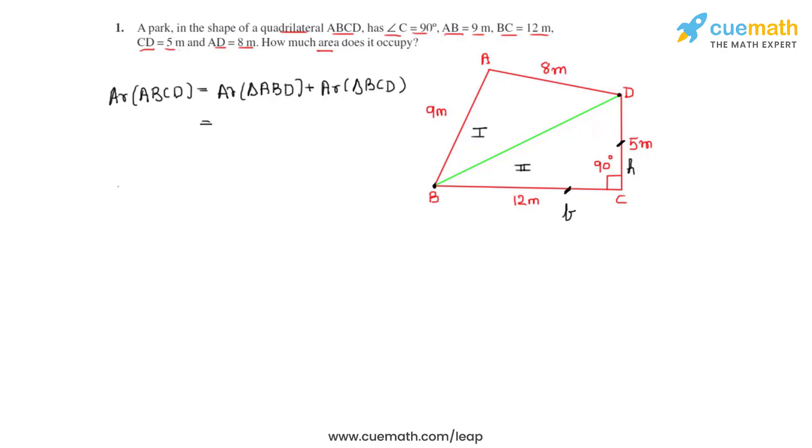So that will be equal to, by substituting the values, 35.496 plus 30, which is approximately equal to 65.5 meter square. And that is the area of the park.